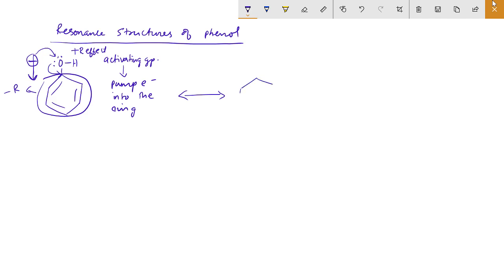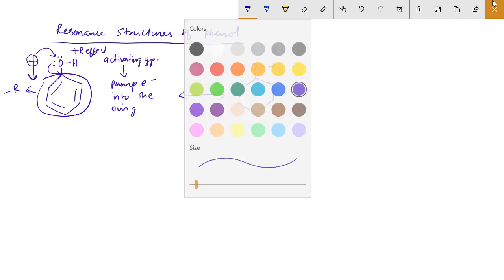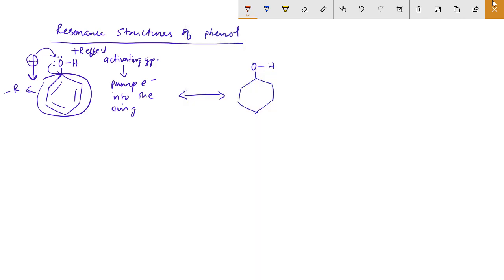First, a single bond. This is OH. This lone pair of electrons — I will show you in a different color. If you look at this carbon, if you look at this electron, there is a double bond.